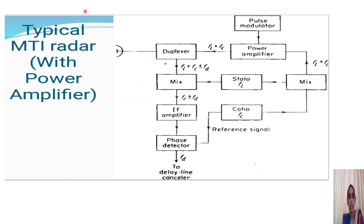This is a block diagram of a typical MTI radar with a power amplifier. In earlier cases we saw an ordinary MTI radar which was not employing a power amplifier. In very noisy environments or where high clutter is present, we have to go for an MTI radar which employs a power amplifier.